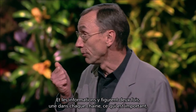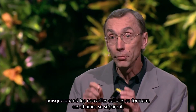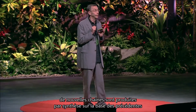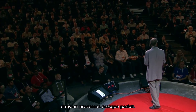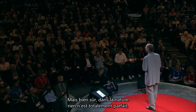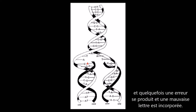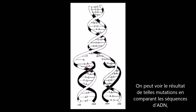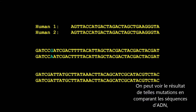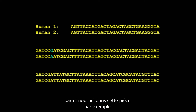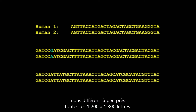The information is there twice, one on each strand, which is important because when new cells are formed, these strands come apart. New strands are synthesized with the old ones as templates in an almost perfect process. But nothing in nature is totally perfect, so sometimes an error is made and a wrong letter is built in. We can then see the result of such mutations when we compare DNA sequences among us. If we compare my genome to a genome of yours, approximately every 1,200 to 1,300 letters will differ between us.